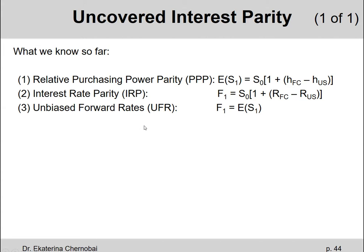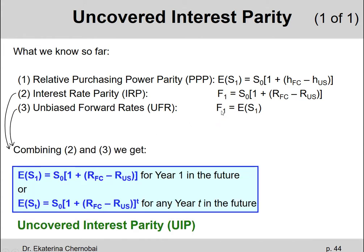What you can first do is, because the one year forward rate and the expected spot exchange rate in one year are set equal to each other in formula number three, then in formula number two, instead of putting F1 on the left-hand side, we can instead put the expected spot exchange rate in one year. So if you combine formulas two and three, it gives us the so-called uncovered interest parity: the expected spot exchange rate in one year equals today's spot exchange rate multiplied by one plus the difference between the foreign country's and the US risk-free rates.